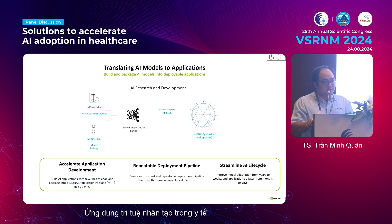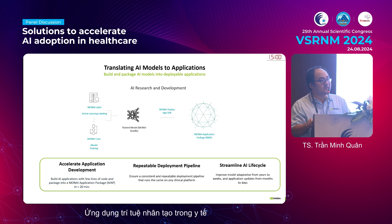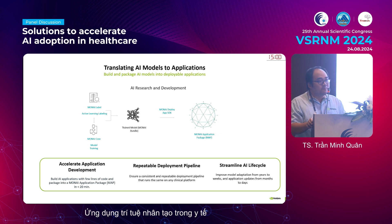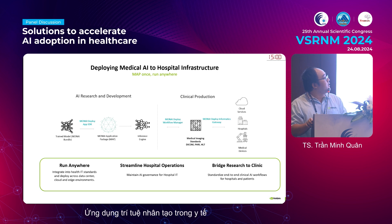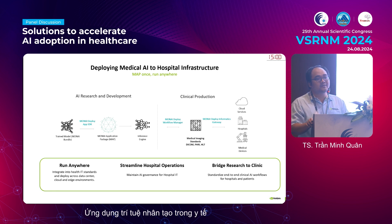Training AI models is complex, so we simplify it step by step, broken down into several modules: MONAI Core, MONAI Label, MONAI Deploy App SDK, and MONAI Application Package. Each module will be presented in detail. The MONAI Application Package helps you deploy and package everything so that it is ready to be installed in your local hospital or university hospital.